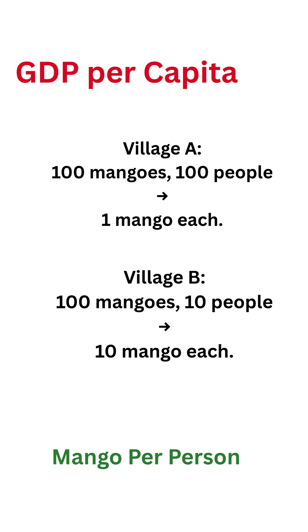Let's talk GDP per capita — that's mangoes per person. Village A grows 100 mangoes and has 100 people; each person gets one mango. Village B also grows 100 mangoes but only has 10 people; each person gets 10 mangoes. Same GDP, very different lifestyle. That's why we use GDP per capita to compare.